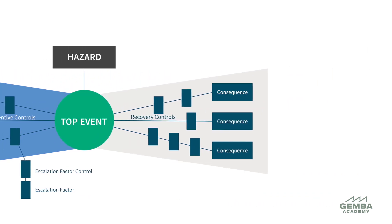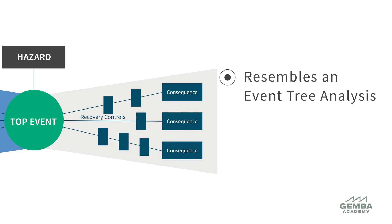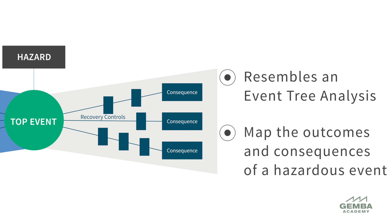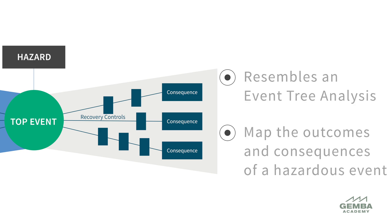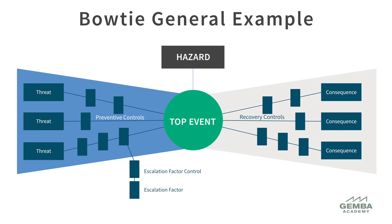The right consequences side of a bowtie analysis resembles a simple version of an event tree analysis. This is where we map the outcomes and consequences of a hazardous event. As you can see, bowtie analysis shows where fault tree analysis and event tree analysis merge linked by a singular top event.